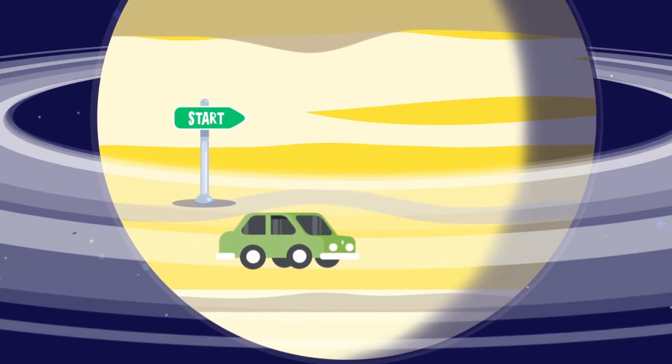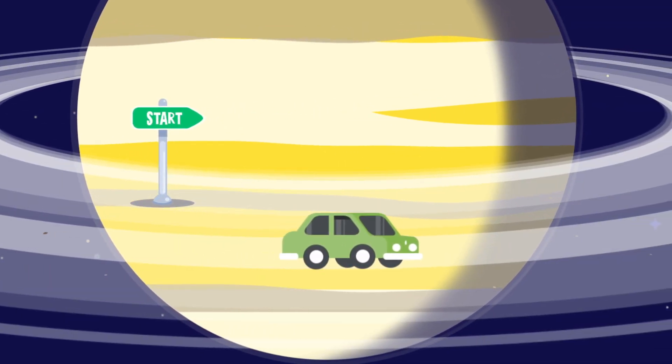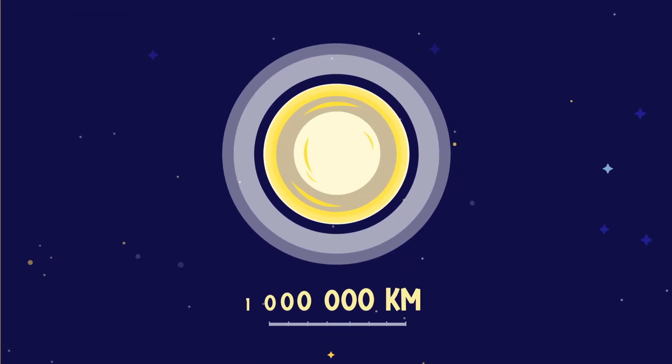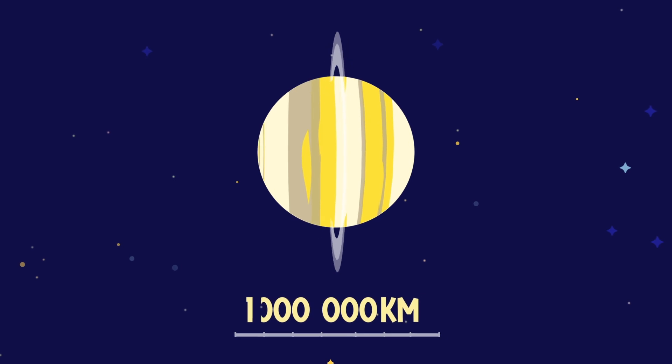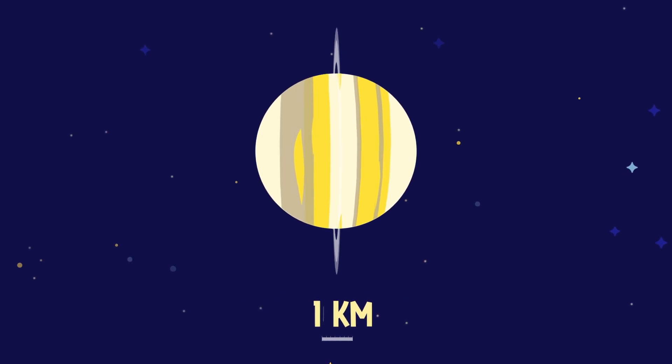To ride along one of the rings in a car, we would need a long journey over a year. At the same time, the rings are so thin that if we were on the equator of Saturn, we would not even notice them.